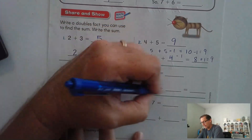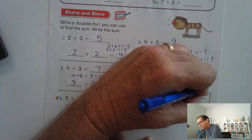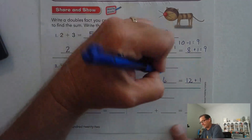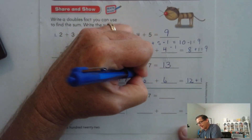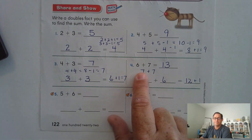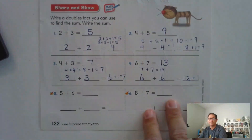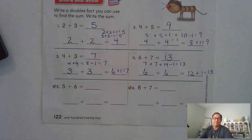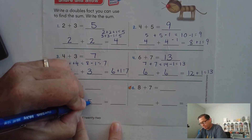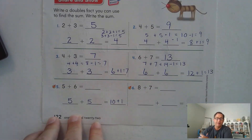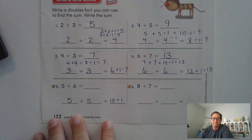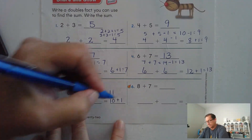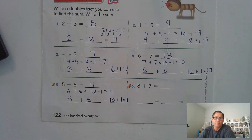6 plus 7: we could do 6 plus 6 is 12 plus 1 — we're changing the 7 to 6 to make a double fact, then adding the 1. If using a higher double fact, I change the 6 to 7, giving 14, then subtract 1 to get 13. 5 plus 6: that's the same as 5 plus 5 plus 1 — 5 plus 5 is 10, and 10 plus 1 is 11. Or I could do 6 plus 6 minus 1. Either way, we get 11.